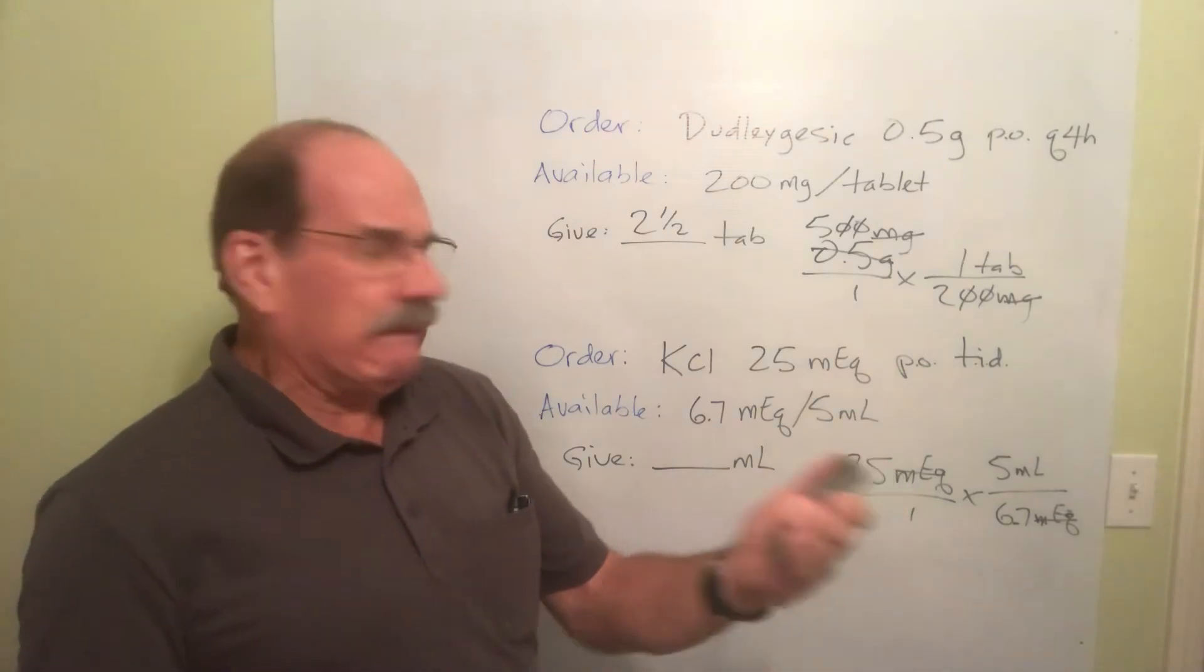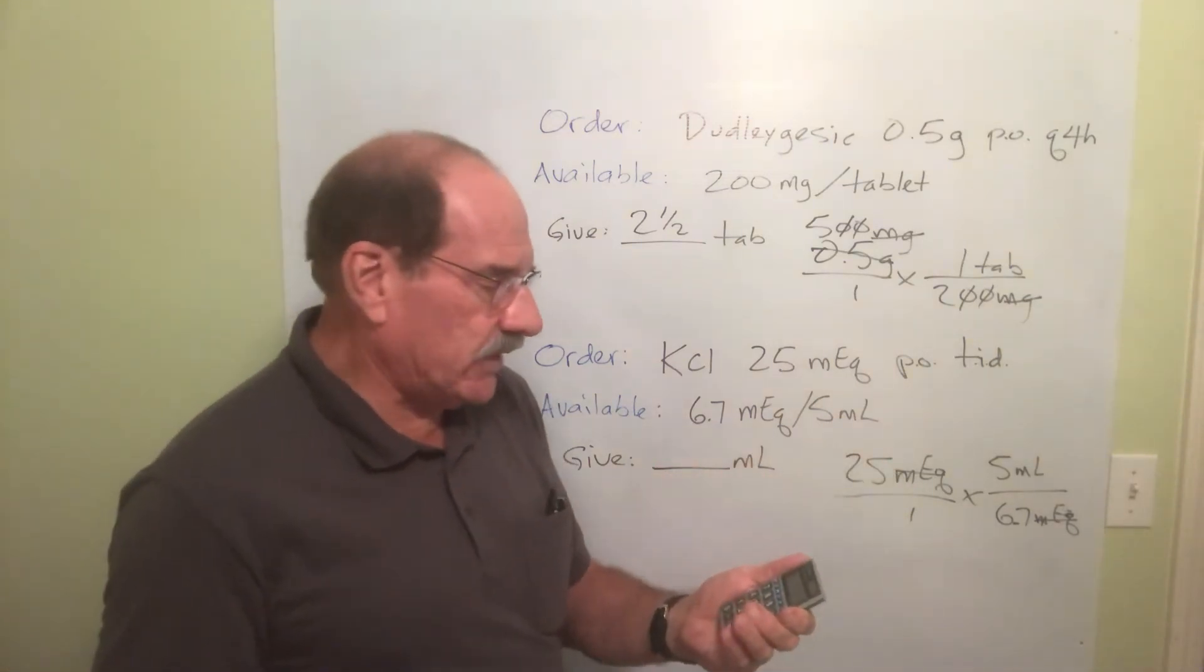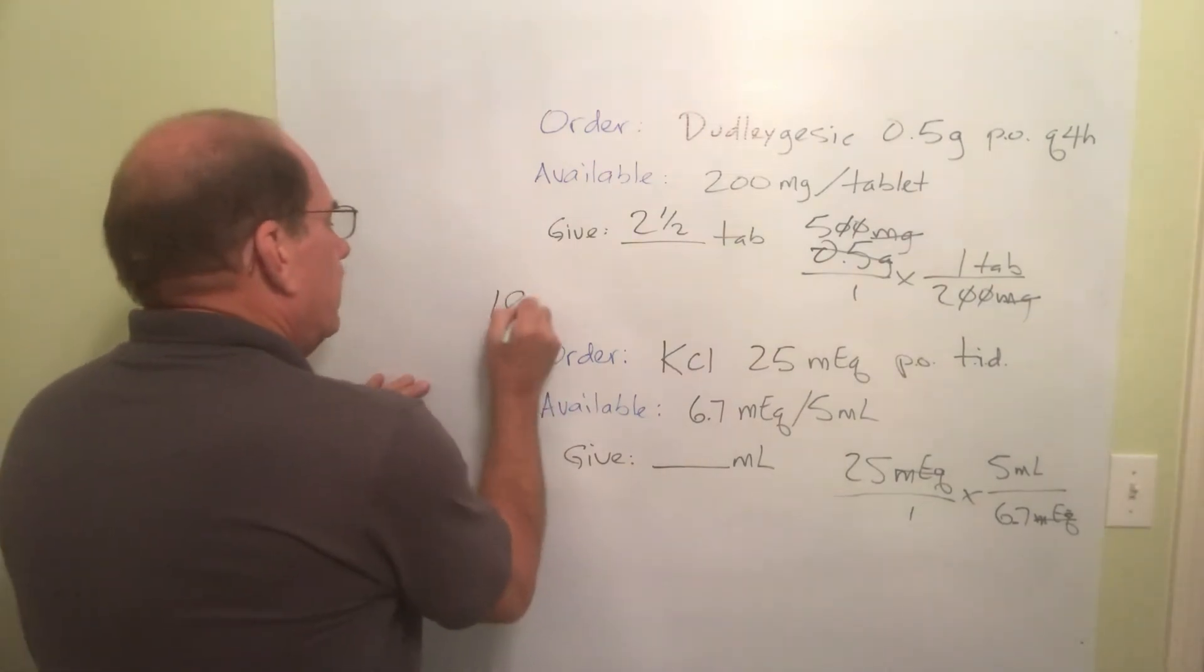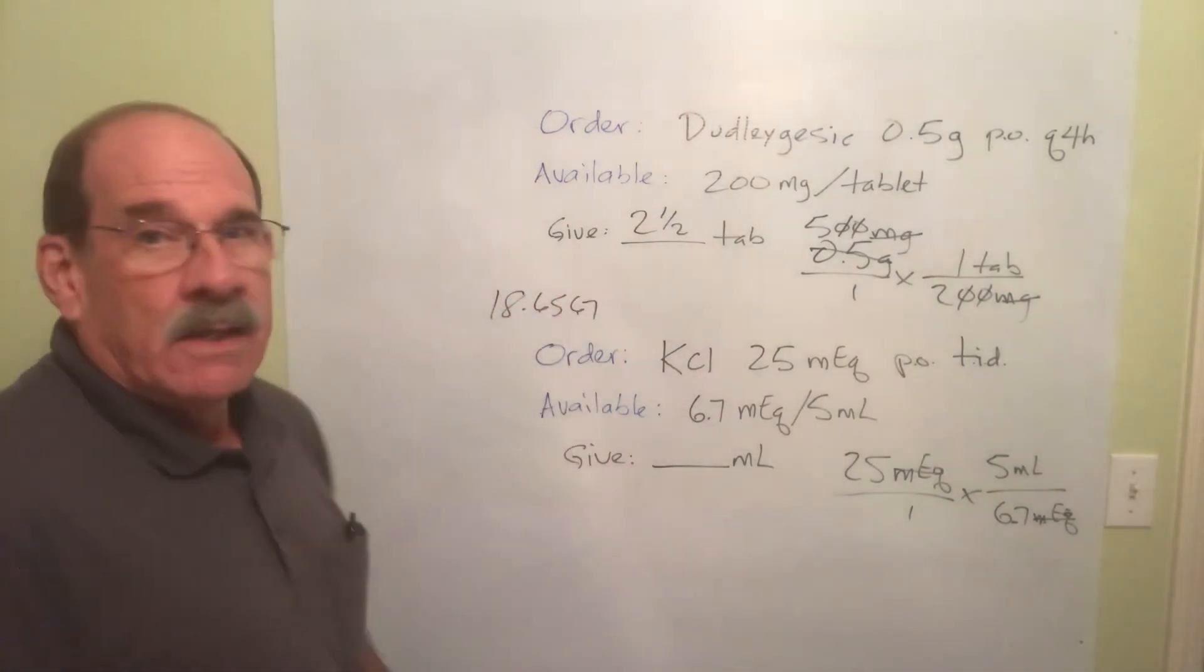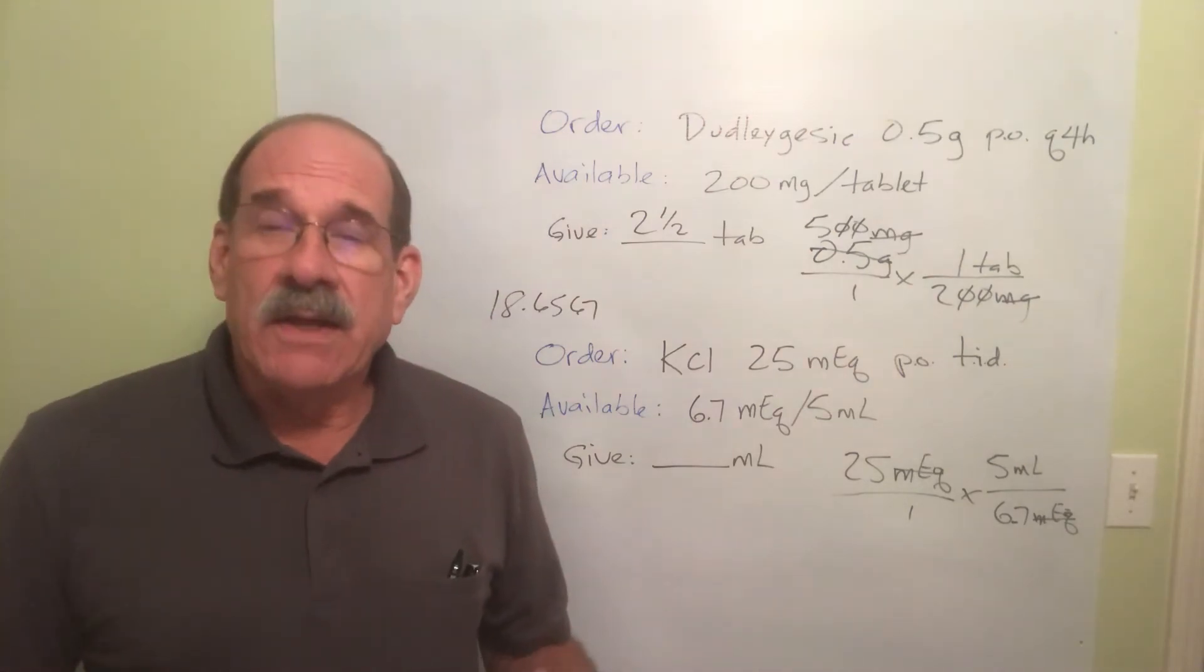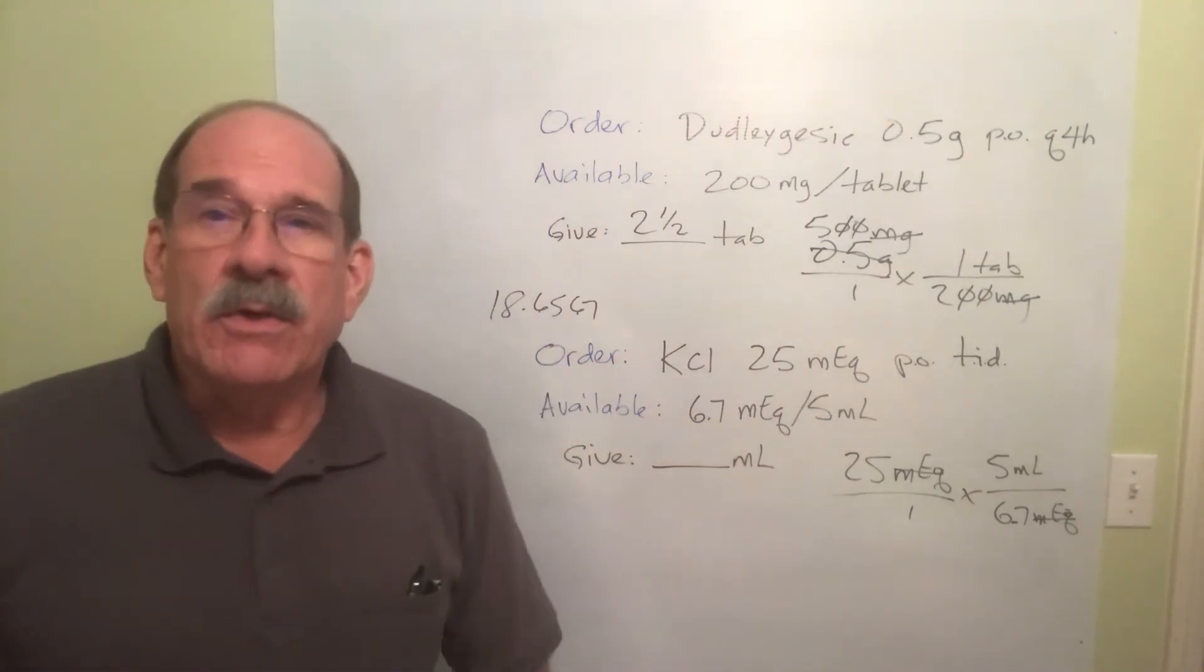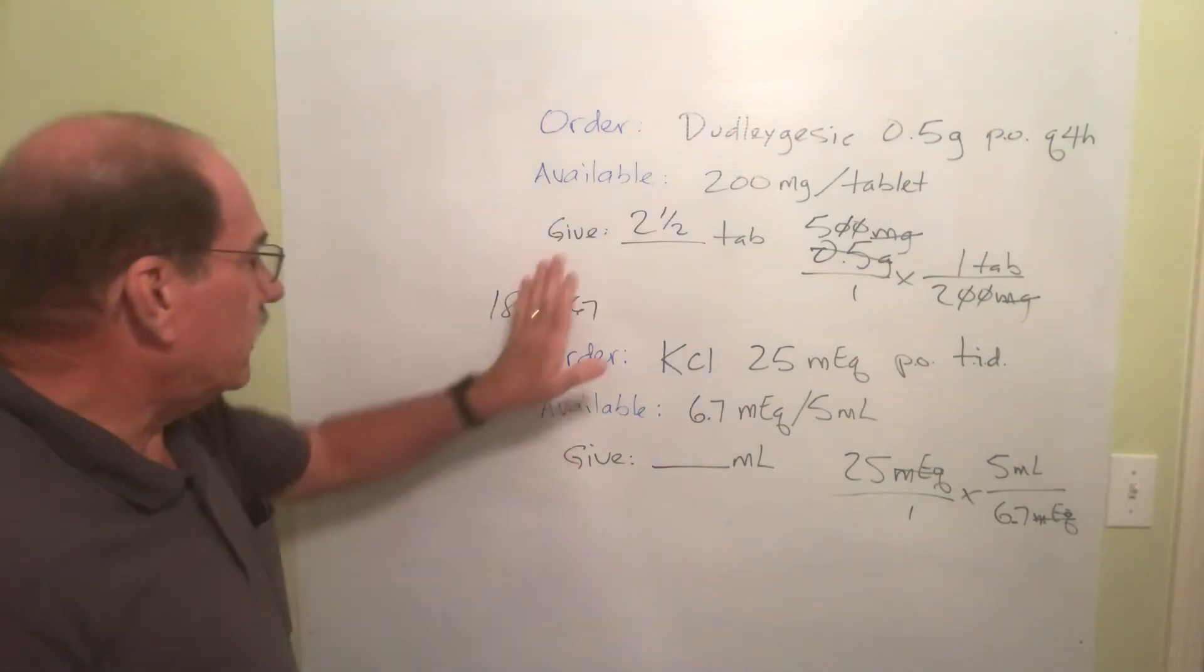And the answer is oh my goodness. It says 18.6567. How far do I round off? Yes. Because it's more than one. Duh. You round off to tenths. You stop it right there.